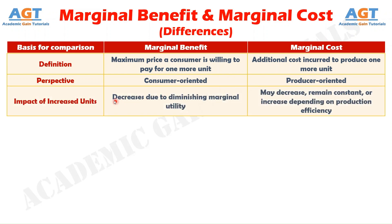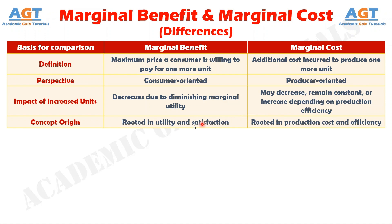Number three: marginal benefit generally declines with increased consumption due to diminishing utility, whereas marginal cost may decrease, remain constant, or increase depending on production efficiency. Number four: the concept of marginal benefit originates from utility theory and economics, whereas marginal cost arises from the principles of production and cost accounting.